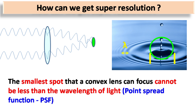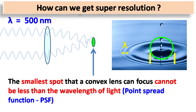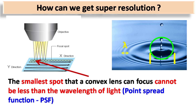The smallest spot that the lens can focus cannot be less than the wavelength of light — this phenomenon is known as the point spread function. For example, if the light used is 500 nanometers, the smallest spot that a convex lens can focus cannot be less than 500 nanometers. The same thing happens with the confocal microscope: the smallest spot of a laser that can be focused cannot be less than the wavelength of excitation light.